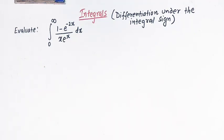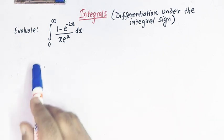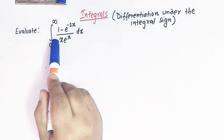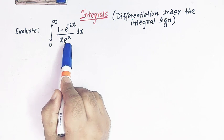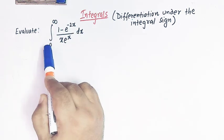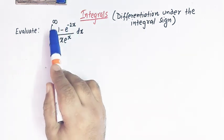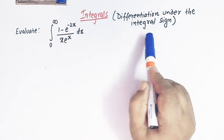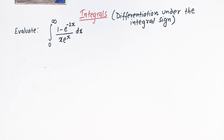Hello viewers! In today's class we are going to discuss yet another important and very conceptual problem from definite integrals under the topic differentiation under the integral sign. We'll solve the integral from 0 to infinity of (1 minus e raised to minus 2x) divided by x times e raised to x. In this lecture we'll learn how to find the value of this integral using the concept of differentiation under the integral sign, which is also known as the Leibniz integral rule. So let us start.